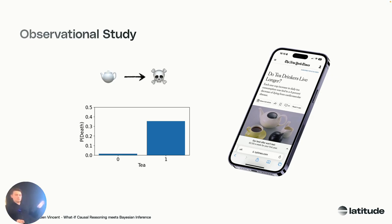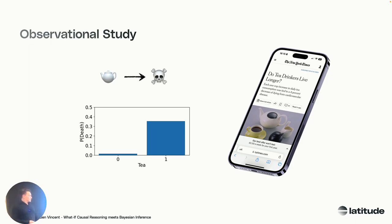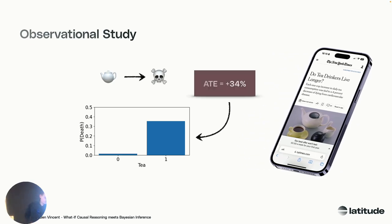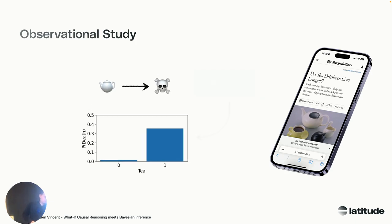Let's work through a practical example: does drinking tea make you live longer? If we grab the data, it doesn't seem that way — the average treatment effect shows that if you start drinking tea, there's a 34% higher probability of you dying. Something seems to be wrong. Well, who is drinking tea generally? It's quite often people who are a bit older. So drinking tea says the gray man — the people that drink tea are kind of subject to this causal error.